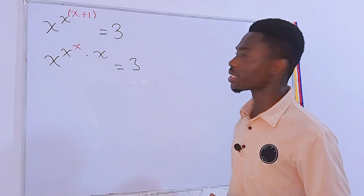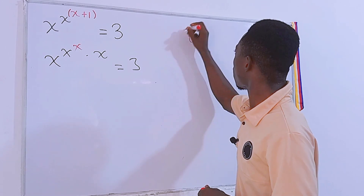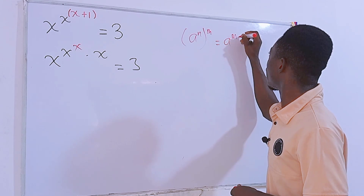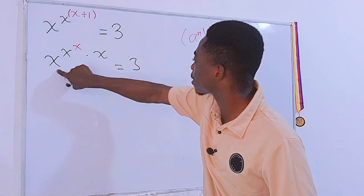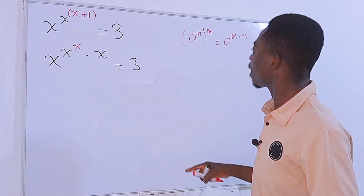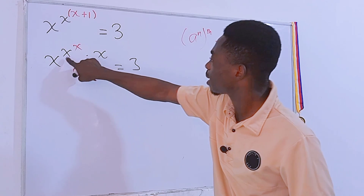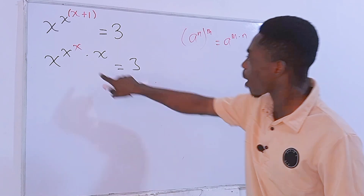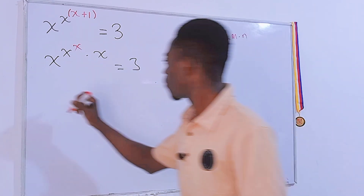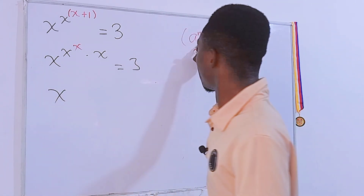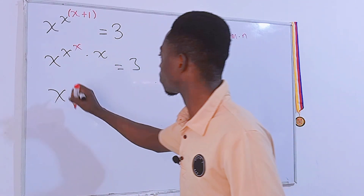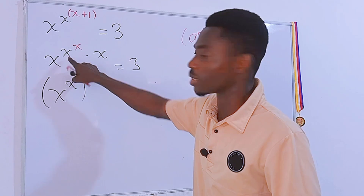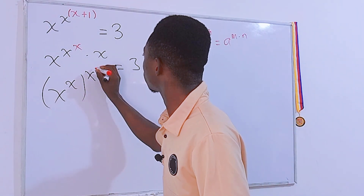Check this out: if we have a to the power n, to the power m, this is the same as a to the power n times m. If you compare the left-hand side of this equation to this rule, we can clearly see that this n is x to the power x, and this m is our x. We can rewrite this as x to the power n, all to the power m.